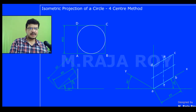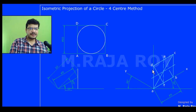Next step is to identify the longer diagonal. The longer diagonal here is AC. Draw a line like this identifying the longer diagonal. Now draw a line joining this corner and midpoint F, and this corner B and midpoint E. Automatically you will get the intersection points — these intersection points are two centers: this is center 1 and this is center 2.